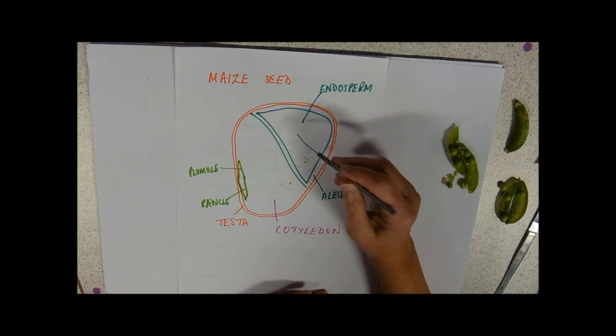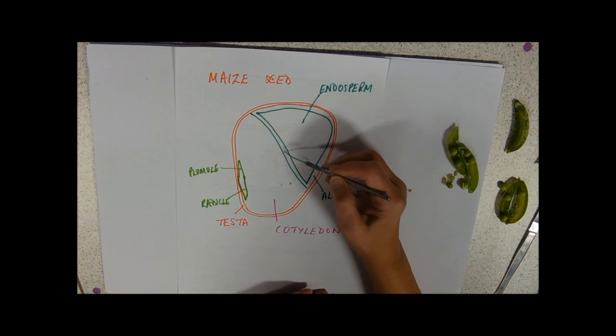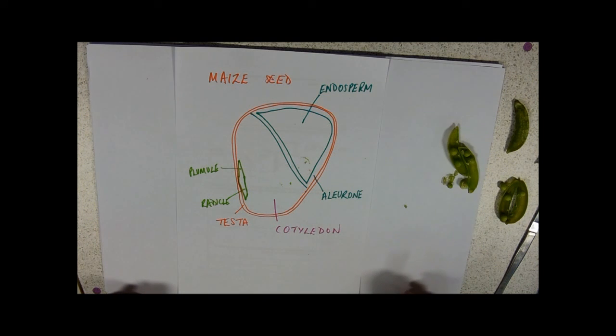We've got the endosperm. The endosperm and the cotyledons are separated. The endosperm is surrounded by the aleurone layer, again to release that hormone to break the dormancy. So I'm going to go and eat the rest of the sugar peas now and enjoy.